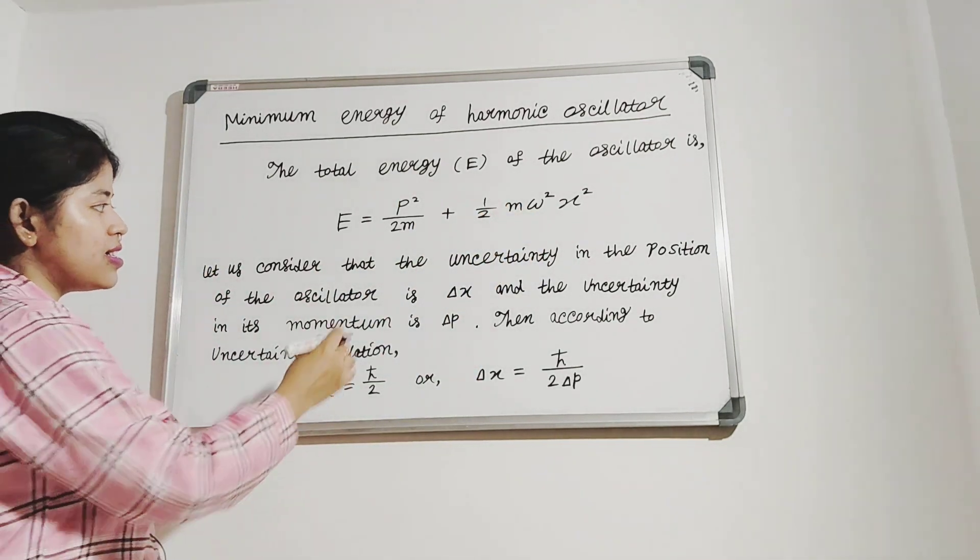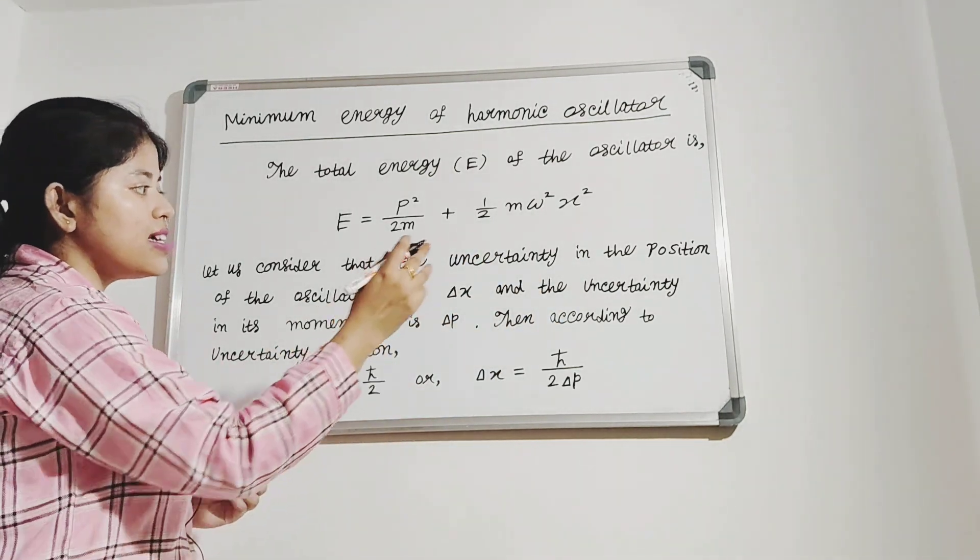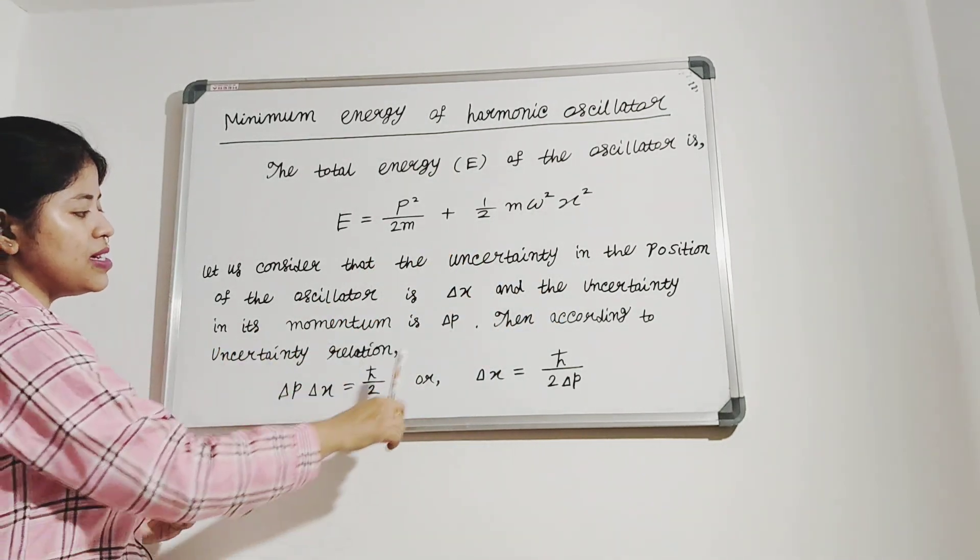Now let us consider that the uncertainty in position of the oscillator is delta x and the uncertainty in its momentum is delta p.